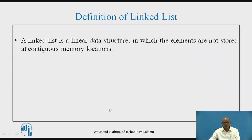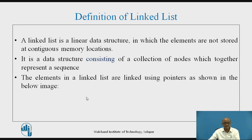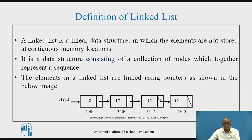Let us see the definition of a linked list. A linked list is a linear data structure in which the elements are not stored at a contiguous memory location, whereas in an array the memory locations are contiguous. It is a data structure consisting of a collection of nodes which together represent a sequence. The elements in the linked list are linked using pointers, as shown in the image below. Each node is connected by a pointer.